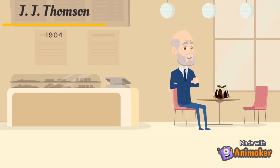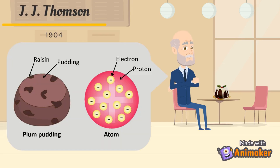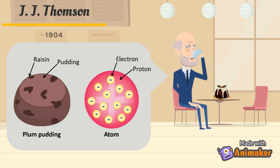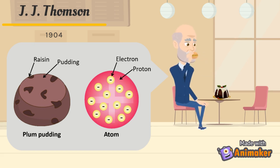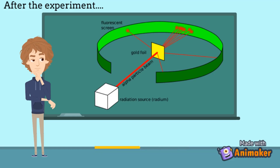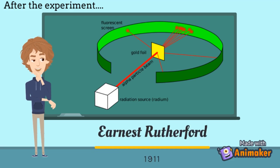I don't think that an atom looks like a solid ball — there must be something inside the atom. Perhaps it looks like plum pudding. Thomson had discovered an electron from a cathode experiment. He observed that electrons travel in a straight line, are negatively charged, and possess mass.